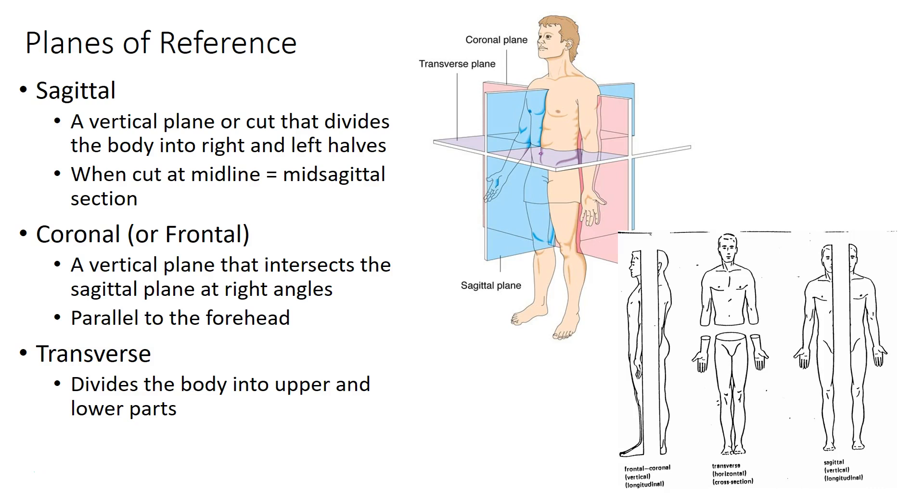A coronal or frontal plane is a plane that separates the front part of something from the back part of something and the transverse plane divides the upper part of something from the lower part of something.